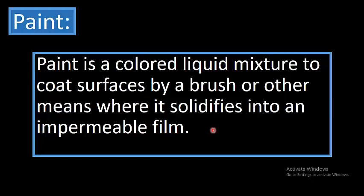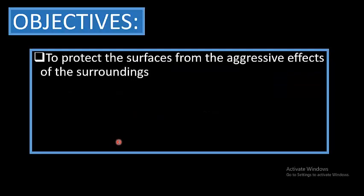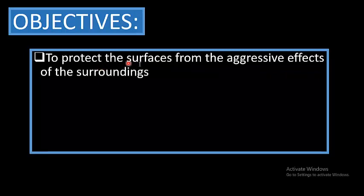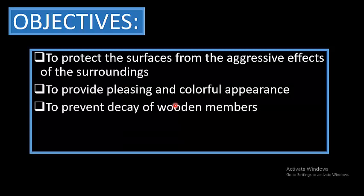First of all, what is paint? Paint is a colored liquid mixture used to coat surfaces by a brush or other means, where it solidifies into an impermeable film. The objectives of paint are to protect the surface from aggressive effects of the surroundings, to provide a pleasing and colorful appearance, and to prevent decay of wooden members.